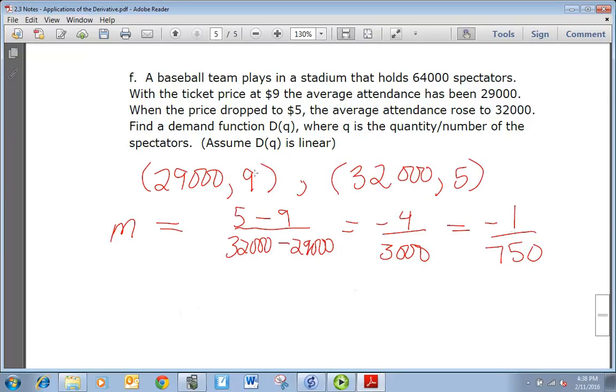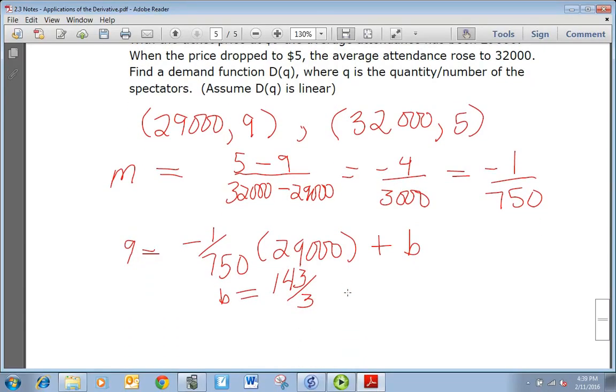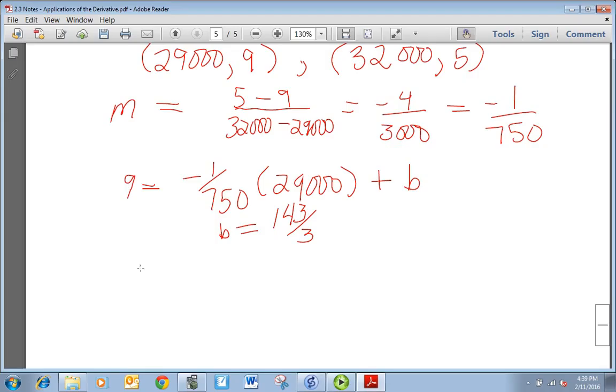To get b, we take either one of these points. I'll take the first one, and it's going to be 9 = -1/750 times 29,000 + b. And if we solve that correctly, we get that b is 143/3. I'll trust you to do the algebra there. So we finally get our function: it's going to be -1/750 q + 143/4.